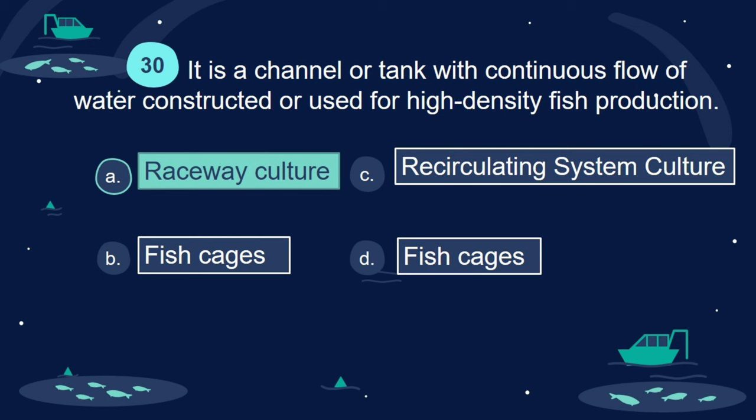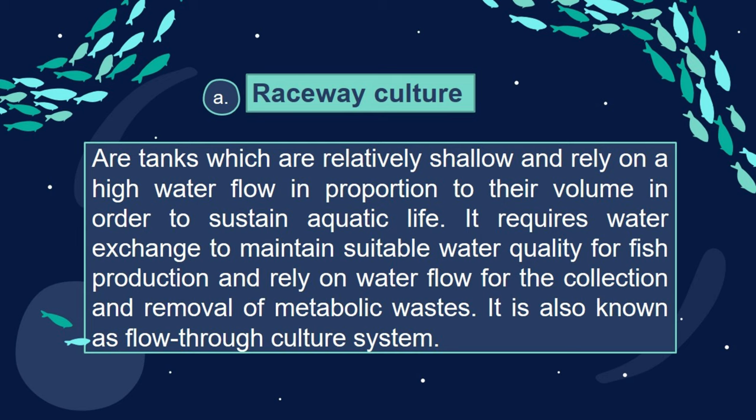Answer: A. Raceway culture. Raceway cultures are tanks which are relatively shallow and rely on a high water flow in proportion to their volume in order to sustain aquatic life. It requires water exchange to maintain suitable water quality for fish production and relies on water flow for the collection and removal of metabolic wastes. It is also known as a flow-through culture system.